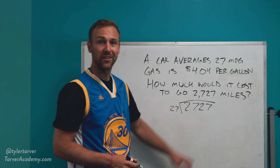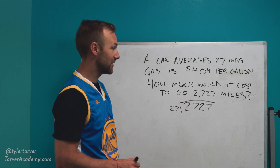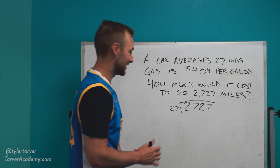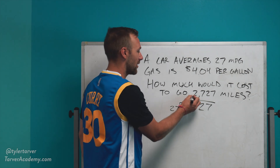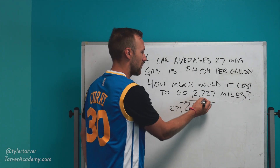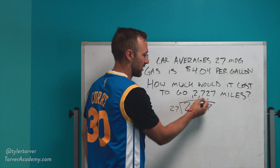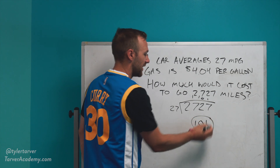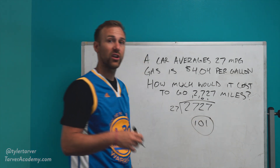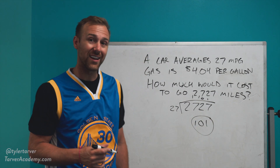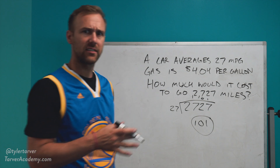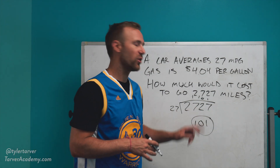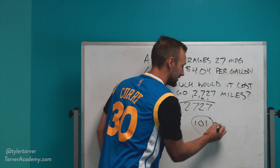That's a lot of 27s right there — three of them, a beggar's dozen. Not true, but anyway. If you type it into your calculator, that's going to be 101 gallons. So it's going to be 101 total gallons.